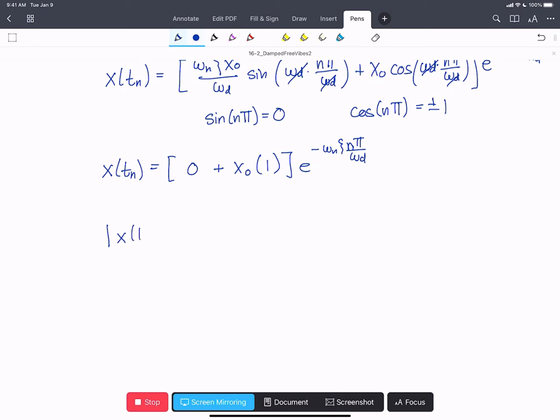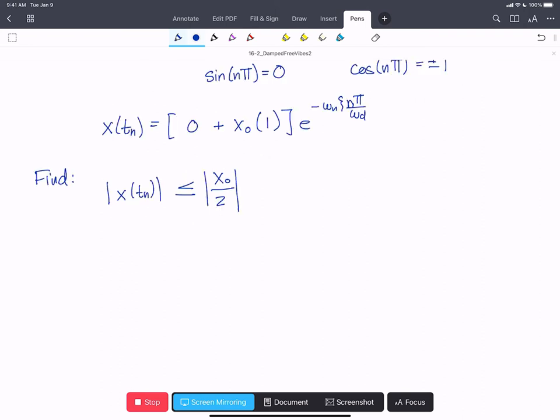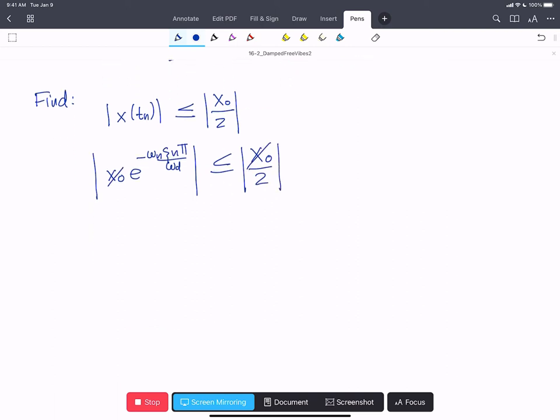Now we want to find the magnitude of x tn when that is less than or equal to x naught over two, so when the magnitude of our peak is less than half our original displacement. We'll plug in our expression for x tn. That's going to be x naught e to the minus omega n zeta n pi over omega d. That has to be less than or equal to x naught over two. Our x naughts cancel, and we can take the ln of both sides. So we end up with minus omega n zeta n pi over omega d is less than or equal to the magnitude of ln of one half.